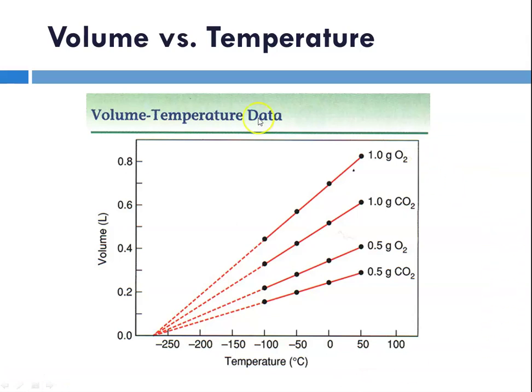So again looking here you'll see that for a variety of gases, if you plot their volume versus their temperature here in degree C, the point where the volume of the gas goes to zero corresponds to the x-intercept and that corresponds to that negative 273.15 degrees C.